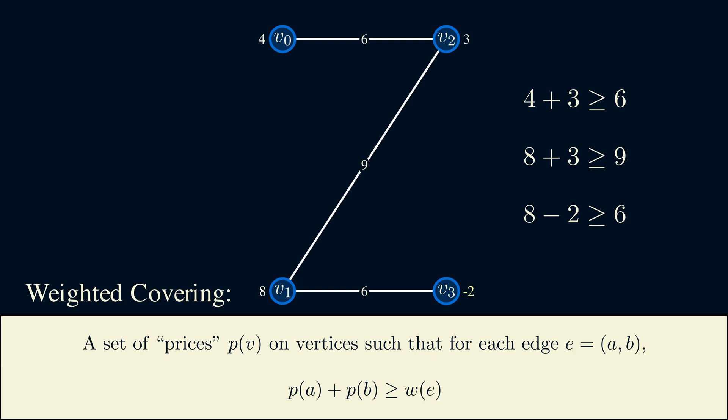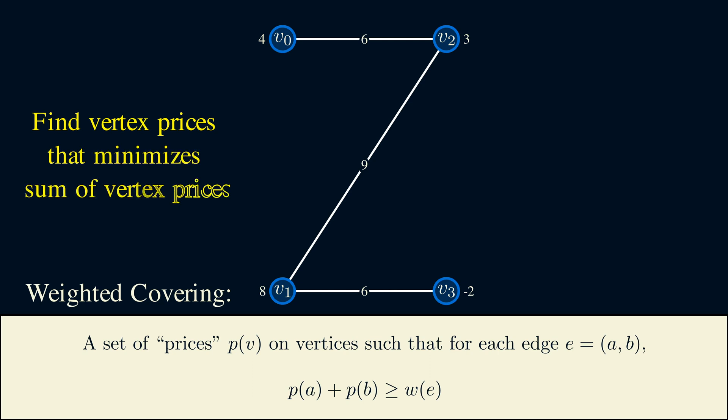Vertex prices are also not fixed, it's something that we set. Similar to vertex cover, the goal isn't to find any covering, but to find the covering with the minimum total price. For our example, the sum of the vertex prices is 13. But this isn't the minimum. We can decrease the price on vertex 0 from 4 to 3. And this changes the total price to 12. 12 also happens to be the value of the maximum weight matching. You can probably see where I'm going with this.